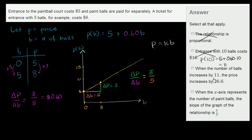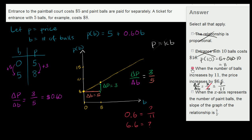Next: when the number of balls increases by 11, the price increases by $6.60. The change in price over the change in the number of balls is always equal to 3/5. So 3/5 = price change / 11. Since 3/5 = 0.6, we get 0.6 × 11 = 6.6. So the price increases by $6.60 when the number of balls increases by 11 — this is absolutely true.